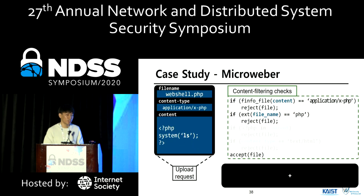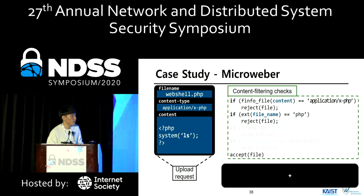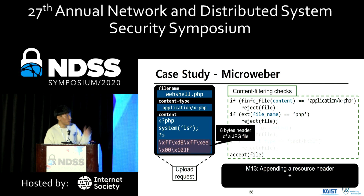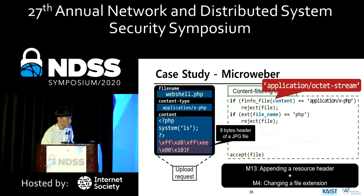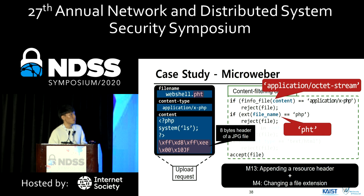Let me introduce one finding from a Microweaver application. The abstracted content filtering checks in Microweaver work as follows. To bypass these checks, FUSE first leveraged mutation M13, which appends an 8-byte header of a JPEG file to the end of the content. As a result, the uploaded file has two file signatures, causing the target application to fail to infer the correct MIME type. Next, to bypass the second check, FUSE changes the file extension from PHP to PHT. By combining these two mutation operations, we can perform remote code execution on the Microweaver application.